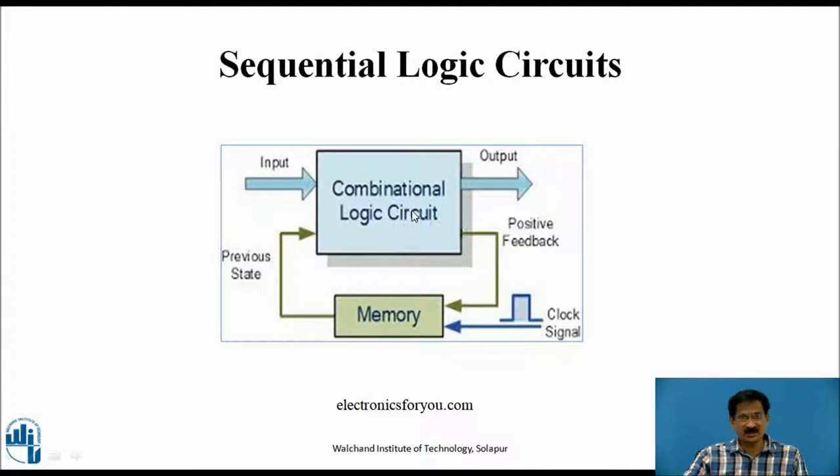Here, this is the combinational logic circuit having input and output. In addition to this circuit, there is one more block shown as a memory block. This memory block has one input as the previous output from the combinational logic circuit and another input which is called the clock signal, which is the train of rectangular pulses. The output of the memory is fed back to the combinational logic circuit, so sequential logic circuit inherently contains a combinational logic circuit as well as a memory element.